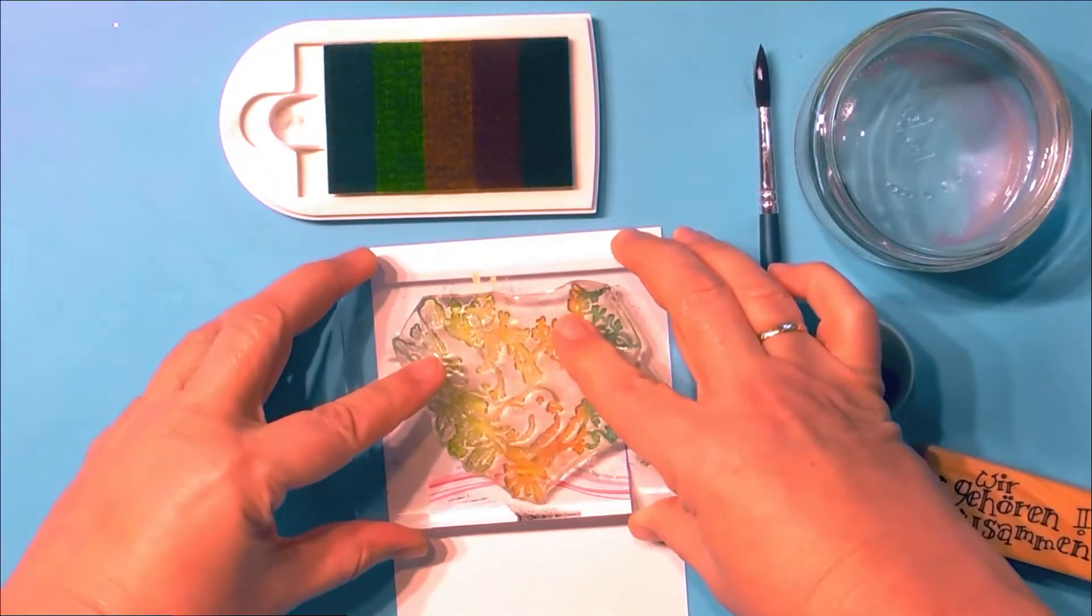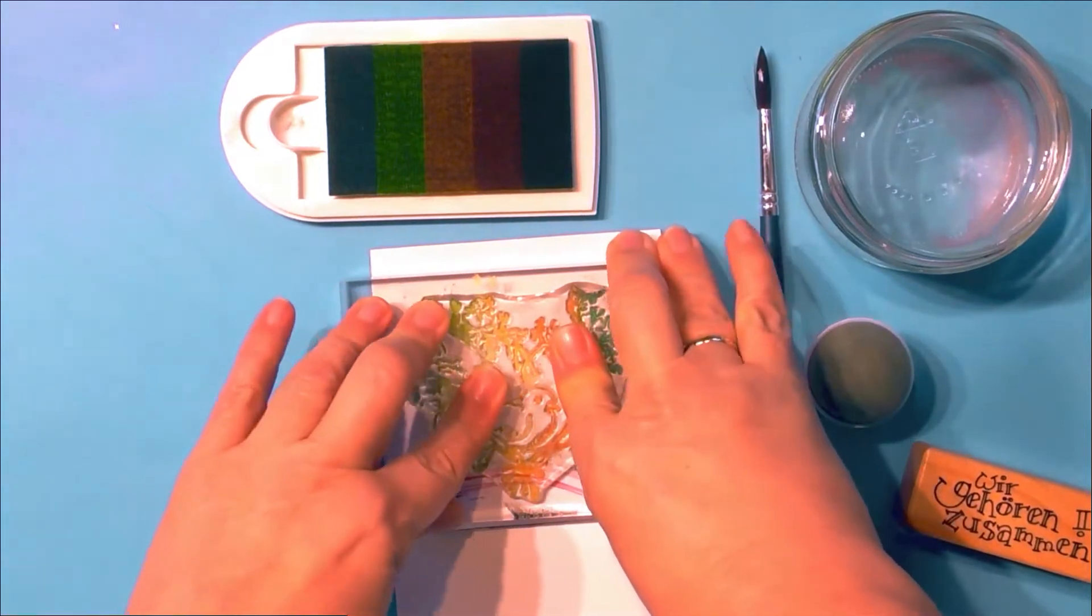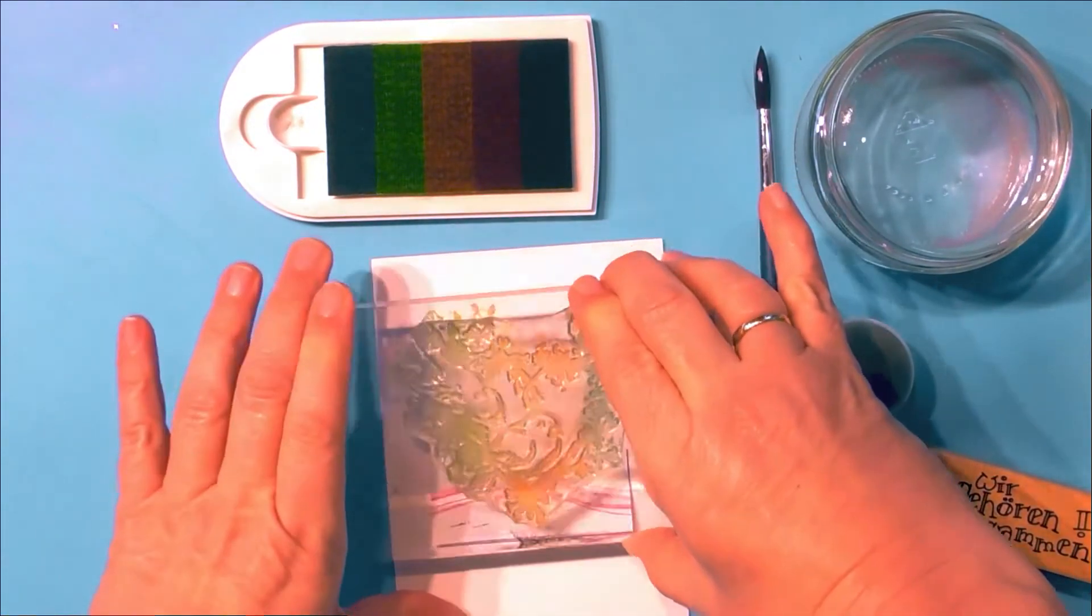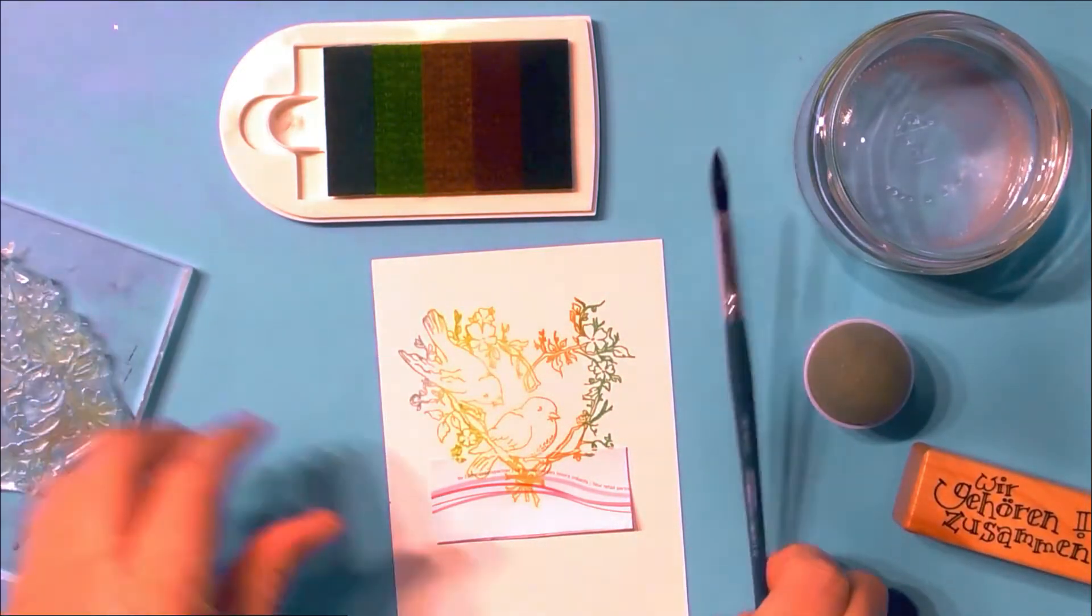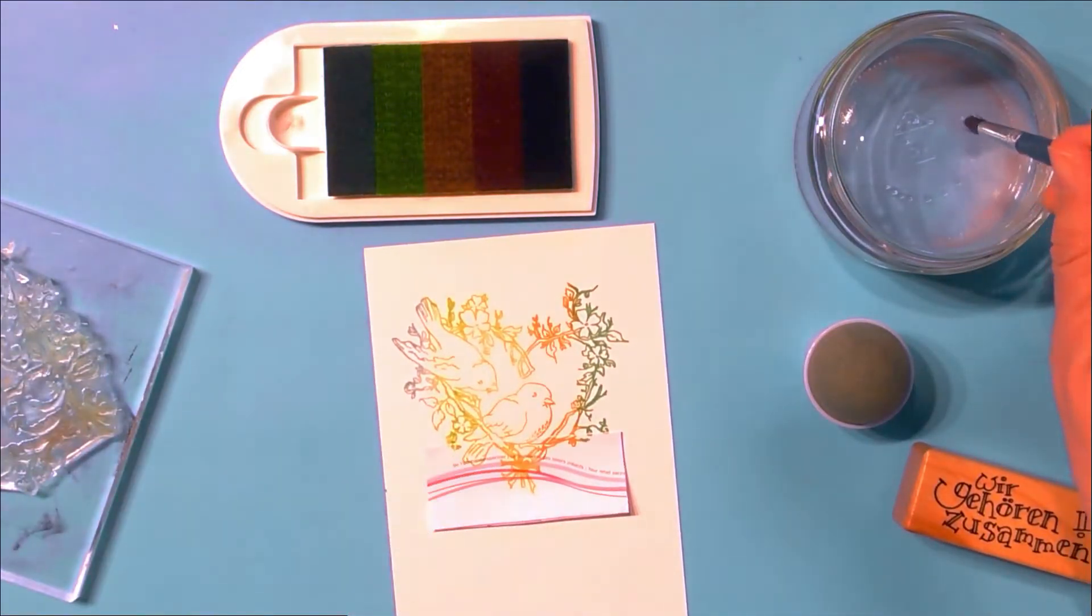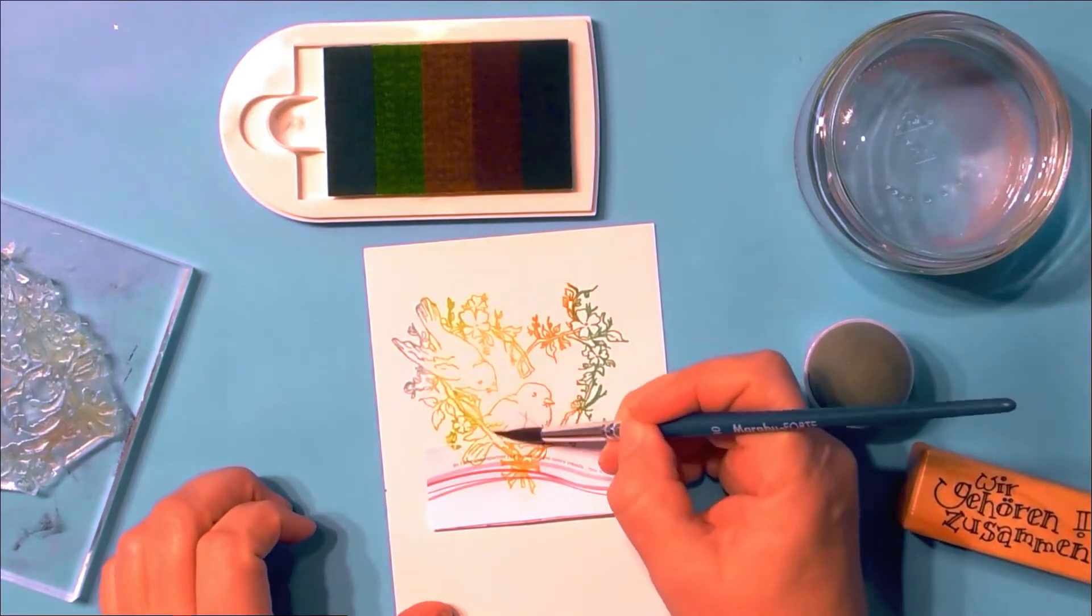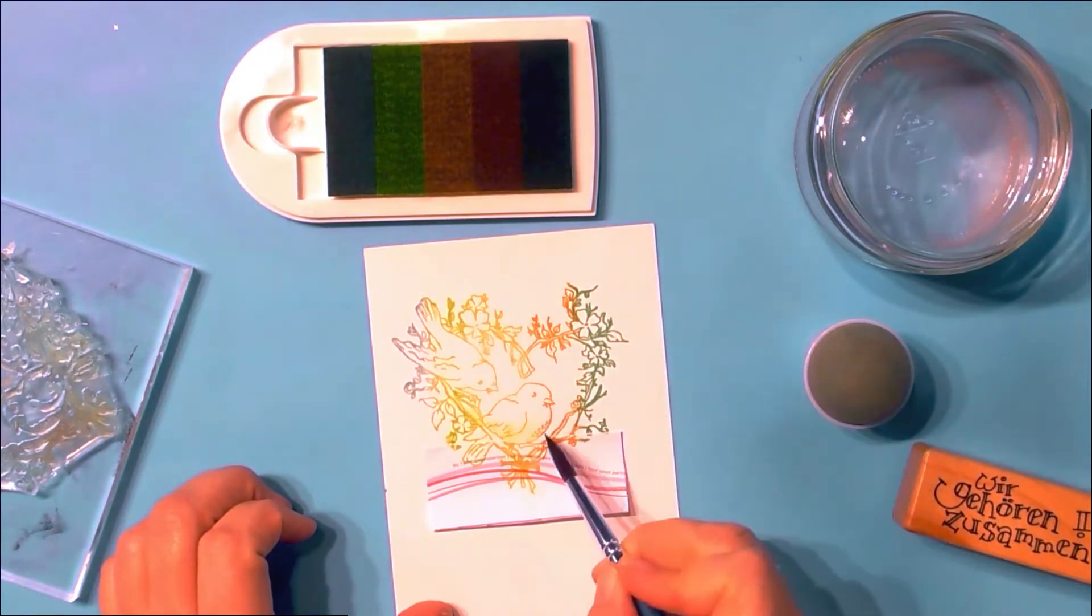Because the Kaleidacolor ink is water soluble, you can create a stunning watercolor effect in a second. Stamp on any quality watercolor paper and add a bit of water. The water will dissolve the ink and create this beautiful watercolor effect.